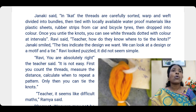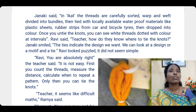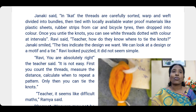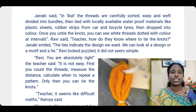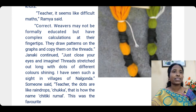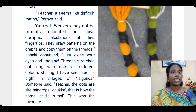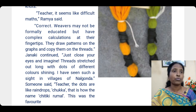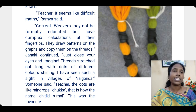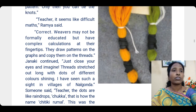Janaki said: in Ikat, the threads are carefully sorted — arranged — warp and weft divided into bundles and then tied with locally available waterproof materials like plastic sheets or rubber strips from car and bicycle tires, then dropped into color dye. Once you untie the knots, you can see white threads dotted with colors at intervals. The pattern is made on the thread before weaving begins.